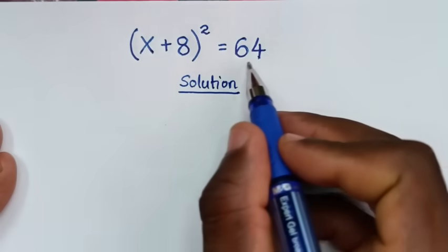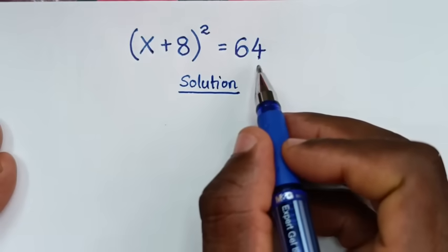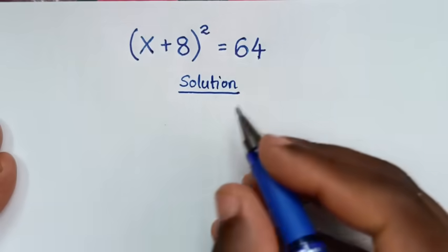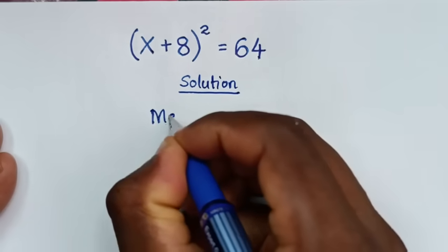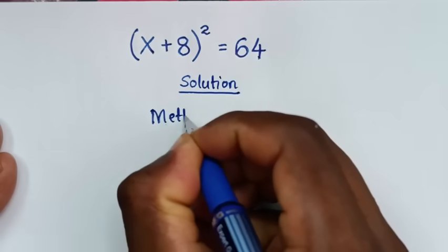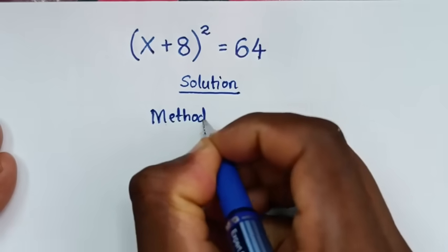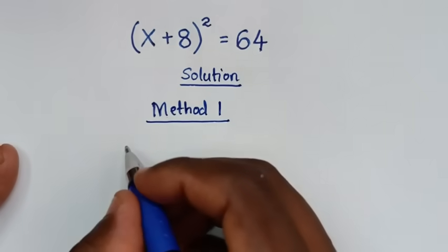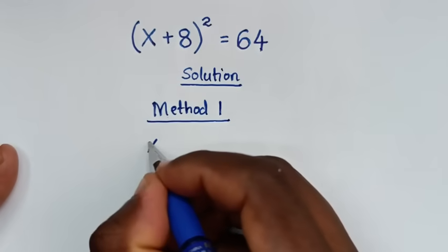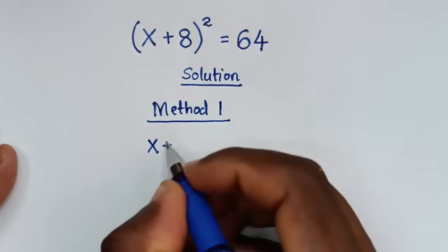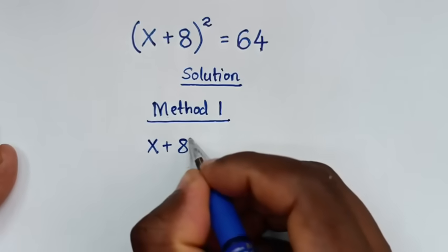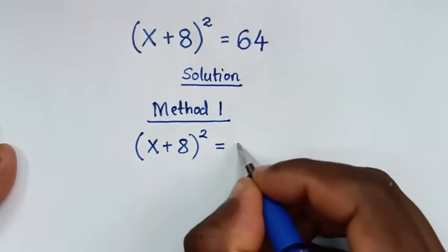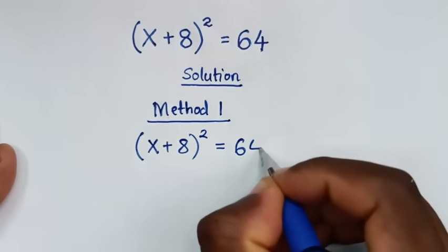From this problem we have two methods to solve it. So let's call this Method 1. From our problem: (x + 8)² = 64.